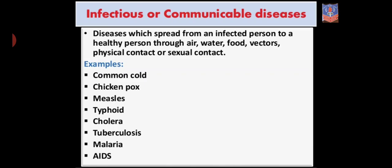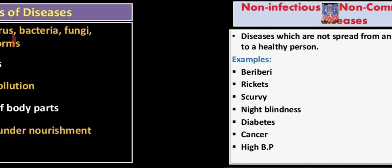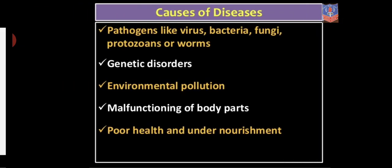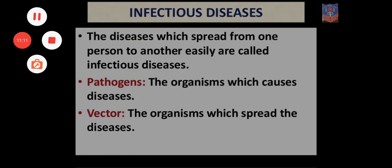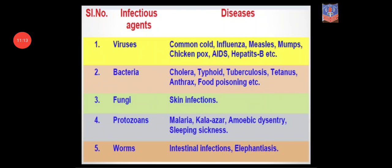Infectious or communicable diseases are caused through various routes — air, water, food, and vectors — and are spread by pathogens and vectors. Various infectious agents and their associated diseases were all explained in the first, second, and third videos of this chapter.